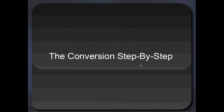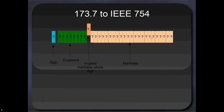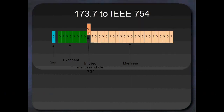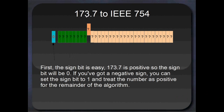Alright, so this is the crux of the tutorial — a conversion step-by-step. Here's our 32-bit bit pattern and we've got no idea what any of them are. The dark orange one is the implied mantissa bit, and that's not actually in the final number's bit pattern — it's implied by the exponent. So we're going to convert 173.7 to its 32-bit floating point bit pattern. The first thing to do is the sign. The most significant bit is the sign bit, bit number 31. That's going to be 0 for positive numbers, like we've got here, or 1 for negative numbers. If your number were negative — say, negative 173.7 — all you'd do is set the sign bit to 1, and then for the remainder of the algorithm you could just pretend it was positive.